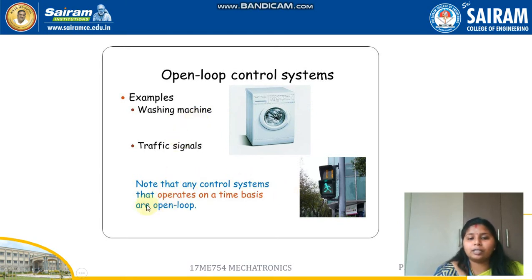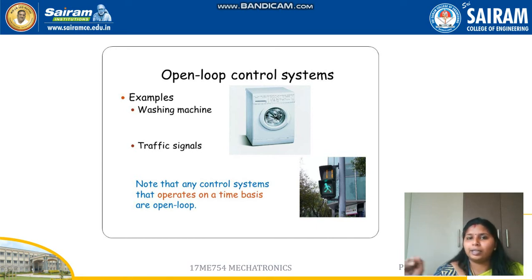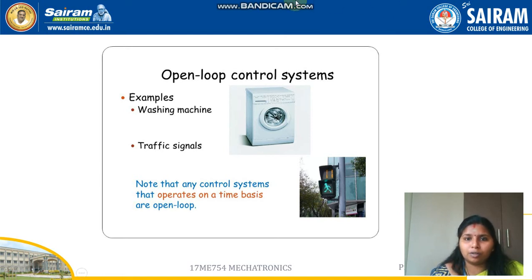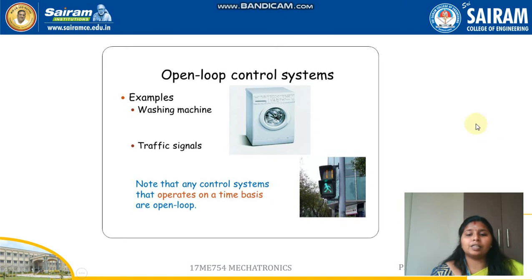Any control system that operates on a time basis is an open loop system. The washing machine also works on a time basis — we know the process is completed, but we don't know exactly whether the required spins are done; we cannot keep counting. We give some instructions, the work goes on, but we don't know whether it is exactly done. Similarly, the traffic signal also operates on time. Any control system that operates on the basis of time is an open loop system.